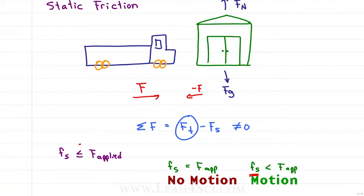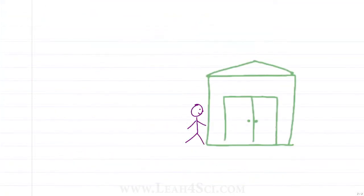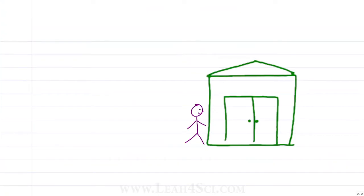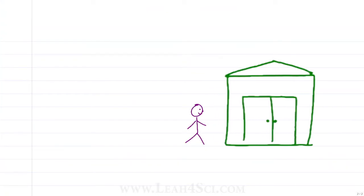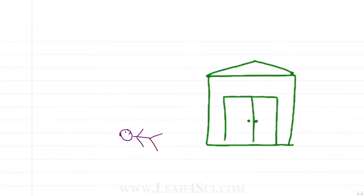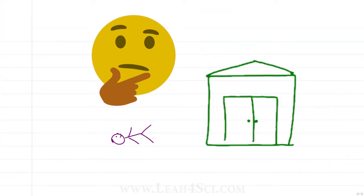Why do we say less than or equal to? Why doesn't the shed automatically apply maximum static friction? Very simple. If you push the shed with a pinky amount of force and the shed opposes with a body-slam counter force, wouldn't the shed push you?